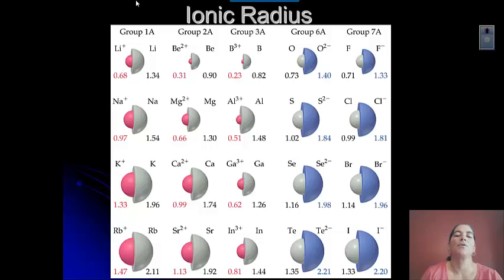Okay, so looking at these, first of all, think about what the gray and what the pink and the blue represent. If you look at lithium in group 1A, on the right side where the gray side is, it's just lithium. And on the left, it's lithium with a positive charge, meaning that it has lost an electron because it's positive.